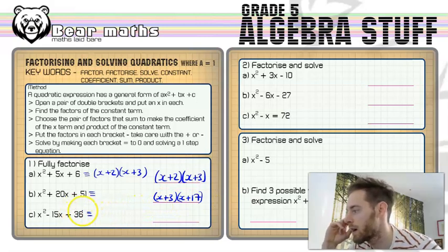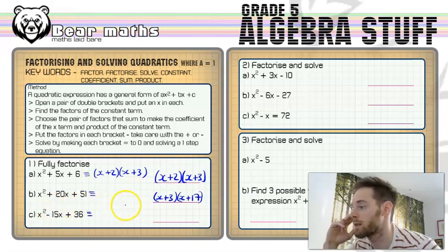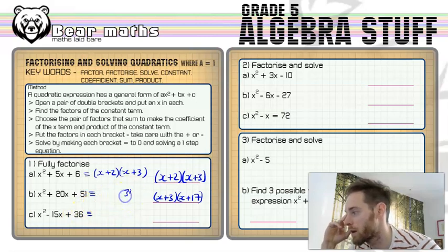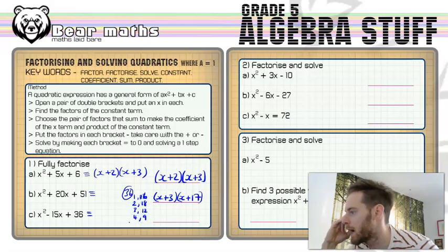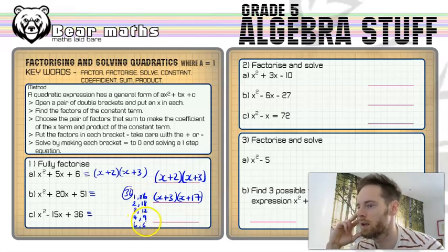And then 36. Factors of 36 that add to make a negative 15 in C. So this one is a bit more complicated. Let's list the factors of 36. 1 and 36, 2 and 18, 3 and 12, 4 and 9, 6 and 6. I'm going to write it twice because it's a pair that we're interested in.